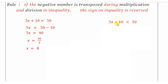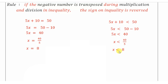Now I'll do the same with the inequality: 5x plus 10 is less than 50. I transpose positive 10 to the other side, giving 50 minus 10 equals 40. Then 40 divided by 5 gives x is less than 8. I performed the same operations as the equation — only the sign changed.